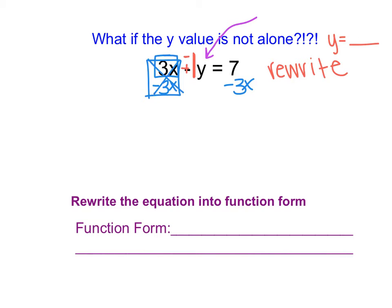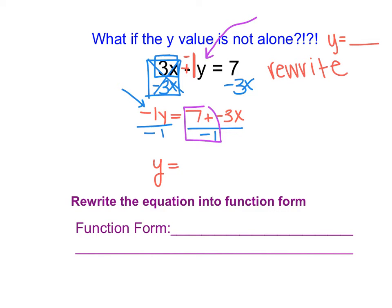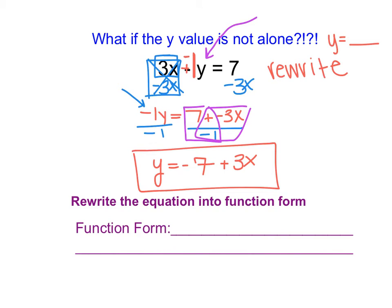Then y is almost alone, but I'm still multiplying by negative 1, so I divide both sides by negative 1. On the left I'm left with y. On the right I do each term: 7 divided by negative 1 is negative 7, and negative 3 divided by negative 1 is positive 3x. So we are capable of rewriting equations for y by themselves using our knowledge of solving equations — move everything that's not y, then divide by the coefficient of y.